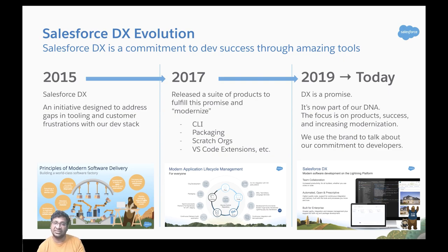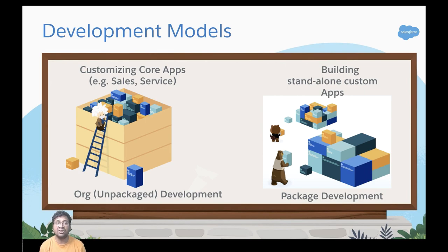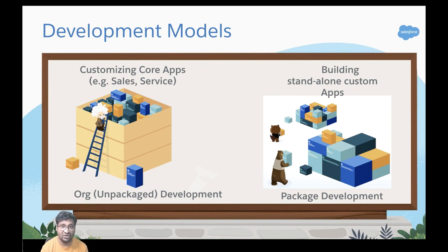There are two development models: the org development model (also called unpackaged development model) and the package development model. In the org development model, the complete metadata lives within the production org. The release artifact is a set of metadata changes, and developers can use sandboxes to build customizations and migrate change sets to production. The package development model is the modern approach where changes are organized as packages instead of one big release. Both models are supported by Salesforce DX.